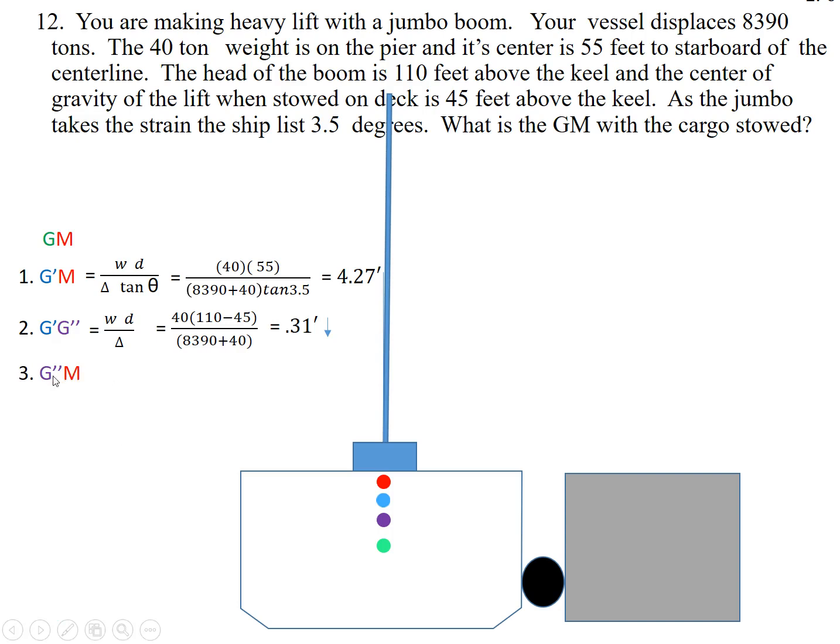Well, if we want to now calculate this new GM, here's metacenter. Here is our G double prime M. Well, that new GM is really this GM plus this shift of G. So it would be the GM that we calculated from this step, 4.27 feet. And now we also shifted from the blue dot to the purple dot. That was our shift of G, 0.31 feet down. So all we have to do now is add those, 4.27 plus 0.31, 4.58. And that is the GM of the vessel with the cargo stowed.